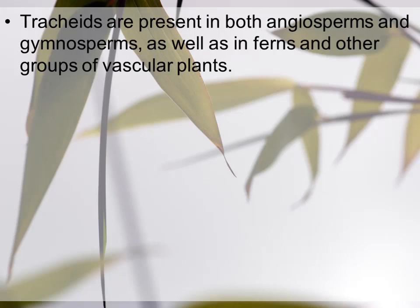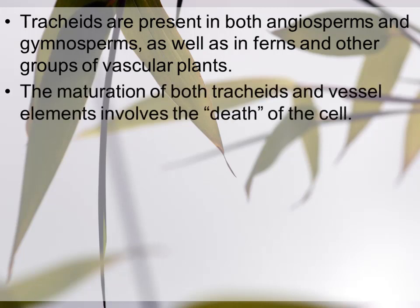Tracheids are present in both angiosperms and gymnosperms as well as in ferns and other groups of vascular plants. The maturation of both tracheids and vessel elements involves the death of the cell. As they mature over time, tracheids and vessels undergo cell death — all organelles inside them are lost.